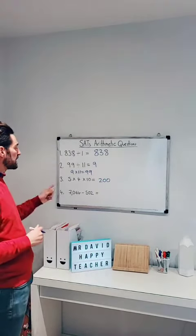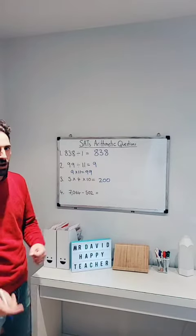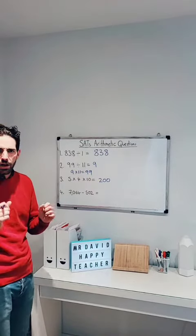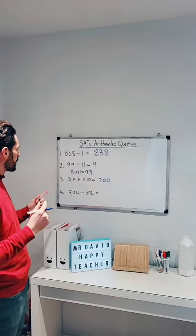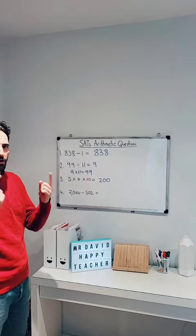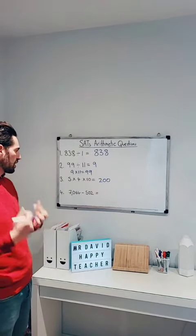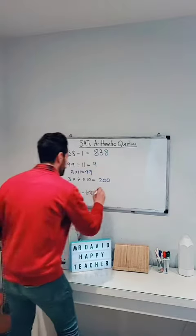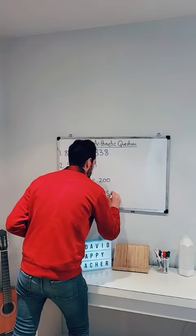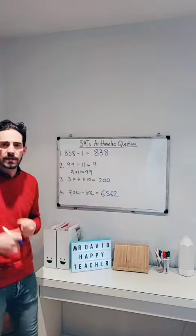In the next question, we've got 7064 subtract 502. First thing I'll do is subtract 500, so I get 6,564. And then I subtract 2, which gives me 6,562. I did that using partitioning.